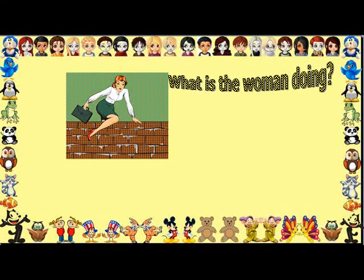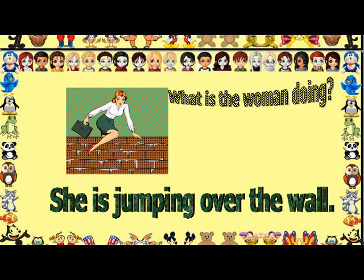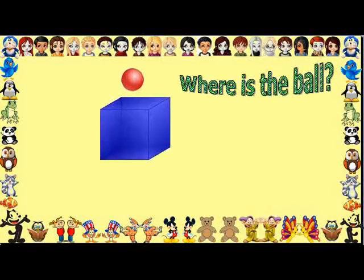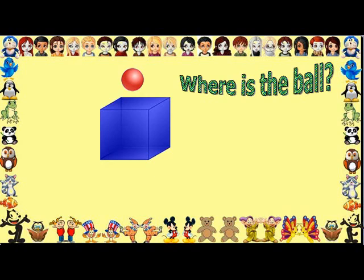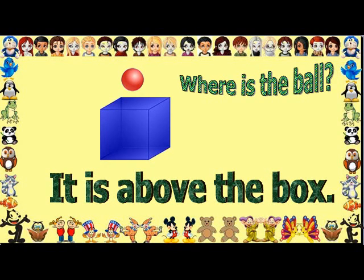What is the woman doing? The bird is flying over the wall. The woman is jumping over the wall. The dog is flying over the wall. Where is the bull? It is above the box.